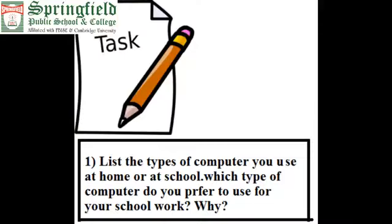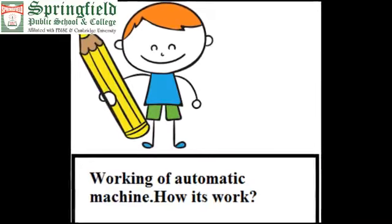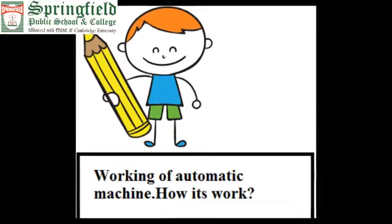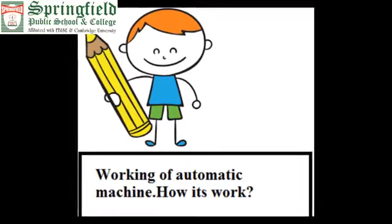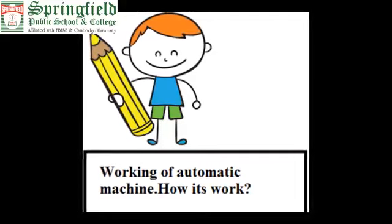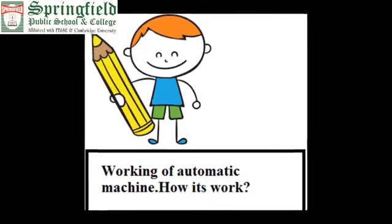Now I am giving you two tasks. Task one: make a list of types of computers you are using at your home or at your school, and mention every type. Task two: give me the working of an automatic machine — how it works and what parts it has. You can Google it and tell me how an automatic machine works.